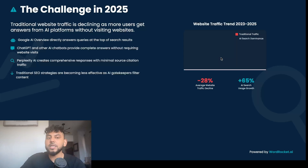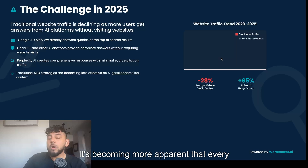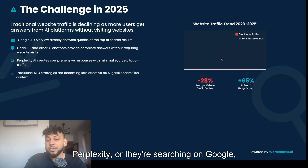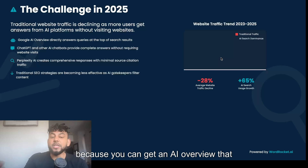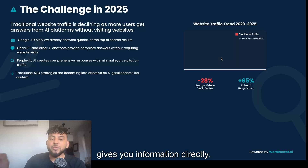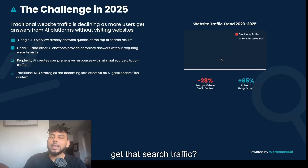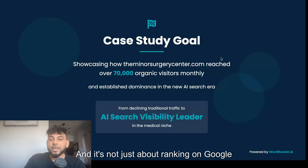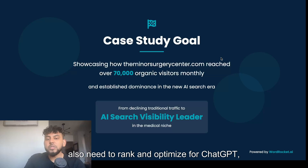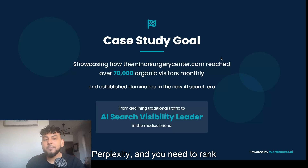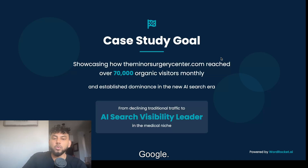In today's video I'll go over exactly how we did this and how you can do so for your own website or business. It's becoming more apparent every single day that people are going away from Google and searching on ChatGPT, Perplexity, or using Google but not clicking on websites because AI overviews give information directly. So it's not just about ranking on Google — you now also need to rank and optimize for ChatGPT, Perplexity, and the AI overviews on Google.